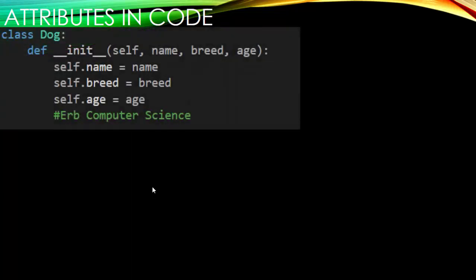So attributes and code, what would that look like? So in Python, it would look like this. You have your own class, which we call dog. And then it has the attributes or the characteristics such as name, breed, and age.